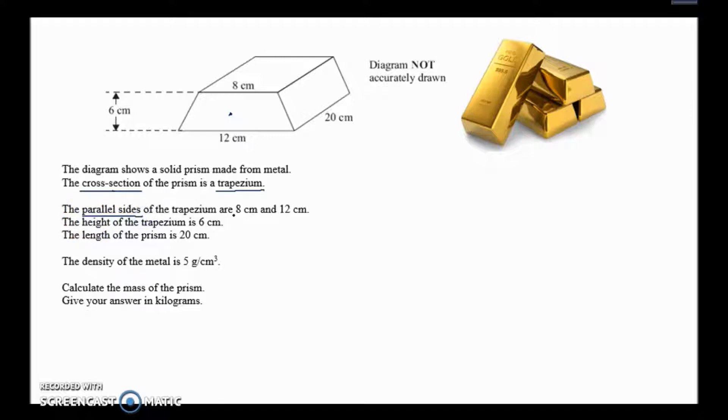This is the parallel sides of the trapezium which is important. The parallel sides are 8 and 12, you can see them up here. Those two lines are parallel. The height of the trapezium is 6, they've been very kind to give us the height which they've shown here, 6 centimeters. And the length of the prism is 20.